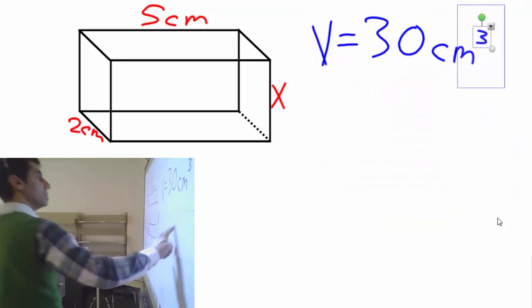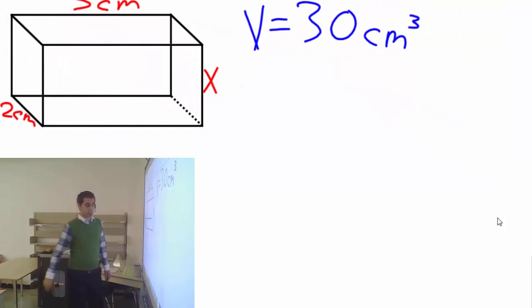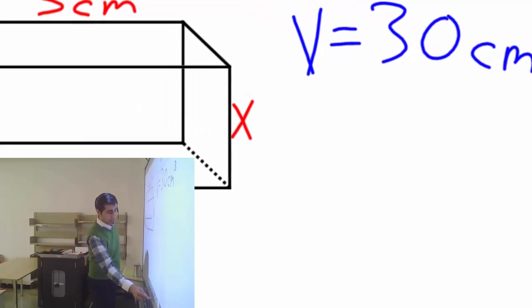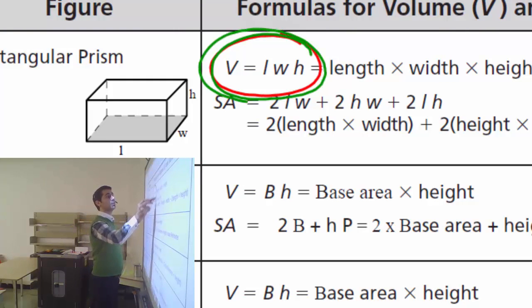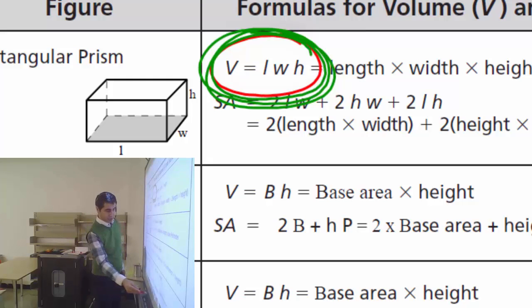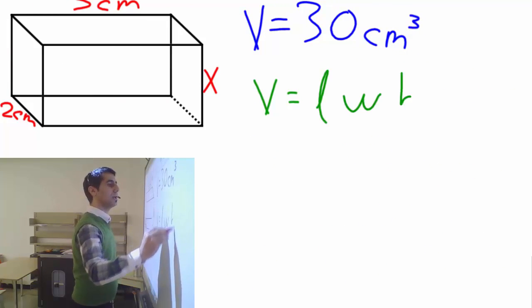Let's say we don't know the height and the volume is given to us. The volume is 30 cubic centimeters. So what do we do first? You write down the volume formula. Volume equals l times w times h.